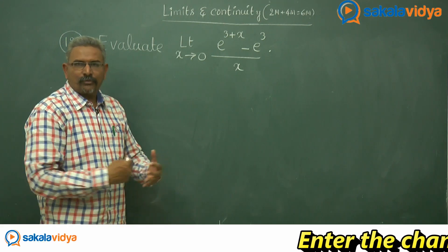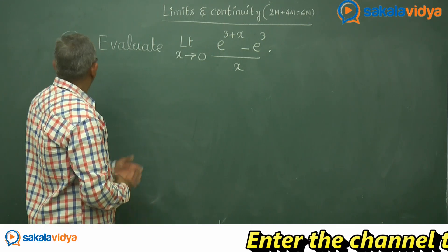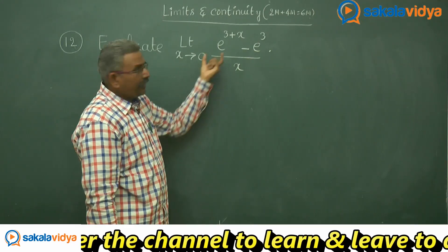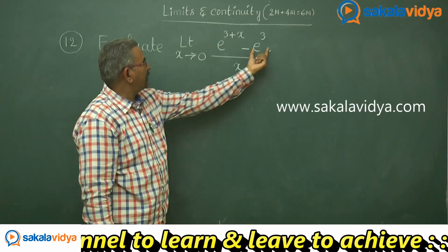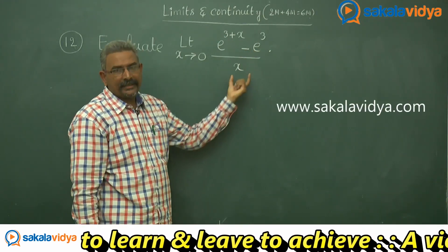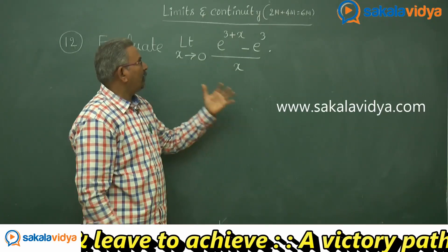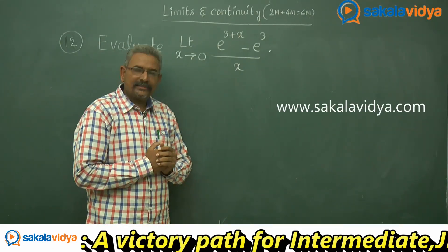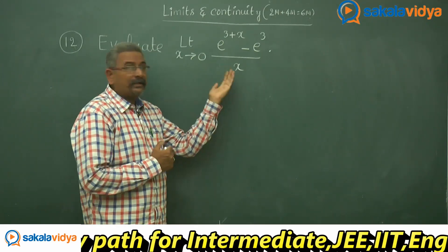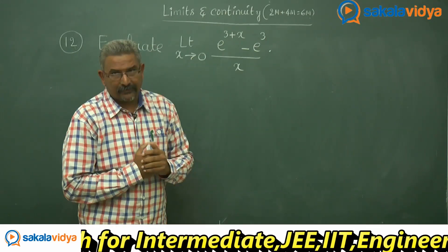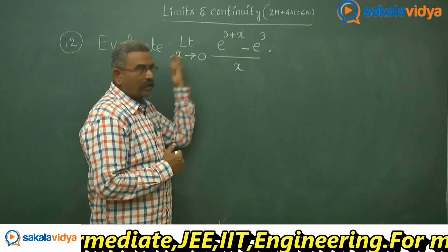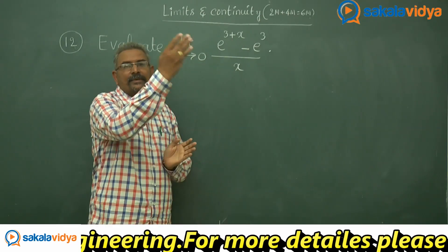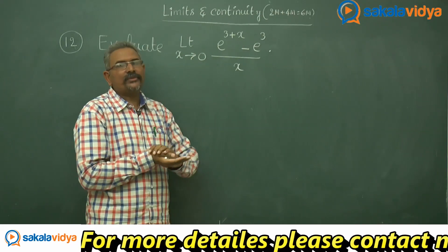Let us solve one more problem. Evaluate limit x tends to 0, e power 3 plus x minus e cube by x. Now, e power 3 plus x we have to write as e cube multiplied by e power x. So we can take e cube common out. Then we have e cube times e power x minus 1 by x, limit x tends to 0.